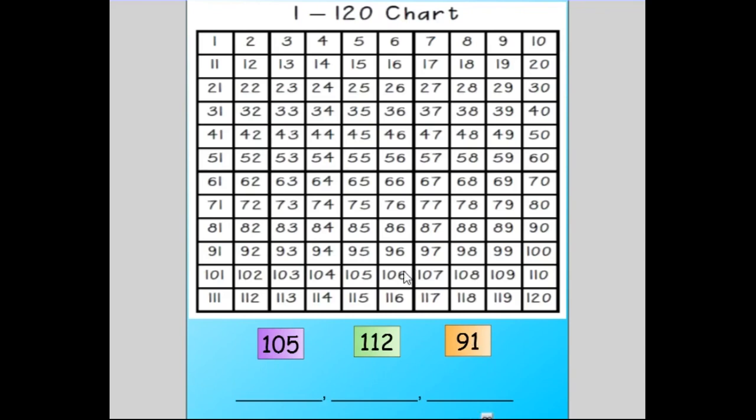So I'm going to use this star to mark all three numbers that were given in our task. I see 105, I'm going to mark 105. The next number I'm going to mark is 112. And the last one I see is 91, so I'm going to mark 91 as well. Then I'm going to go back from the very top and travel down the 120 chart until I see the first number, which is 91.